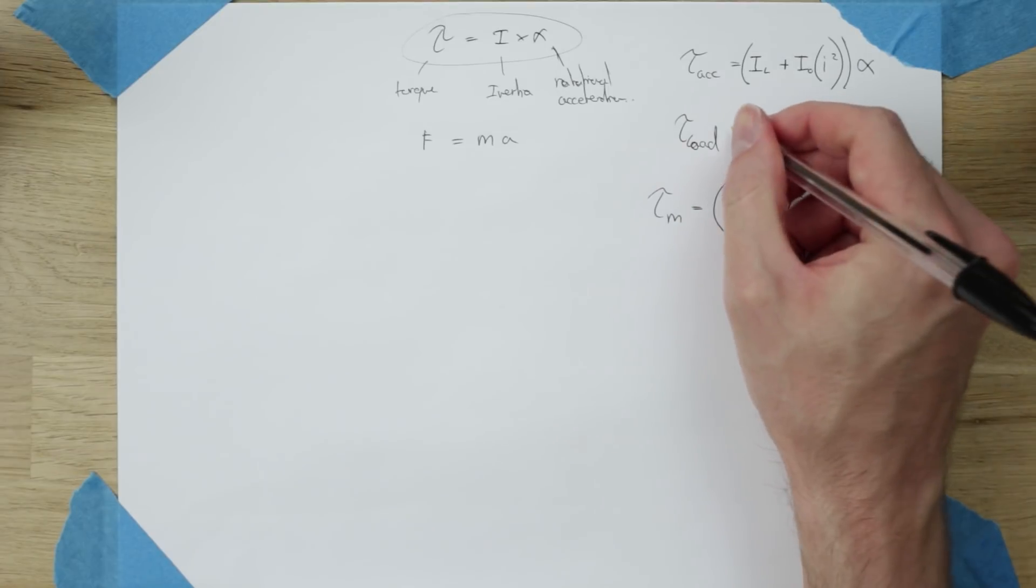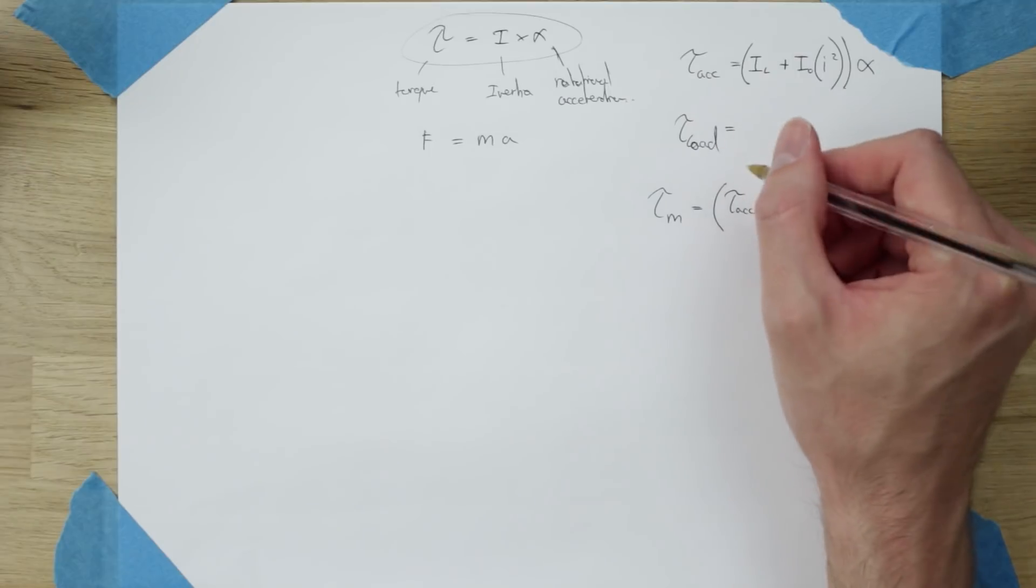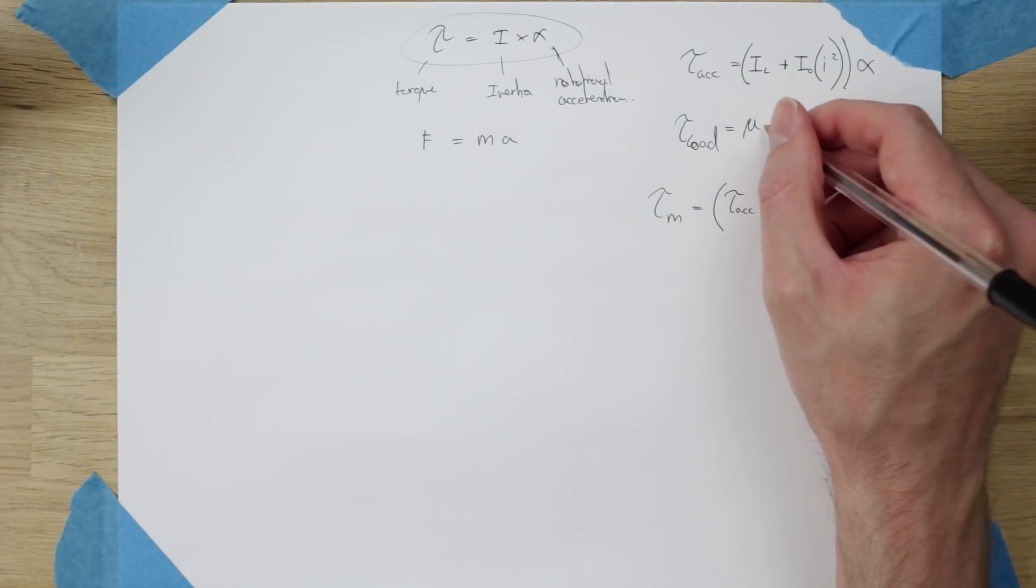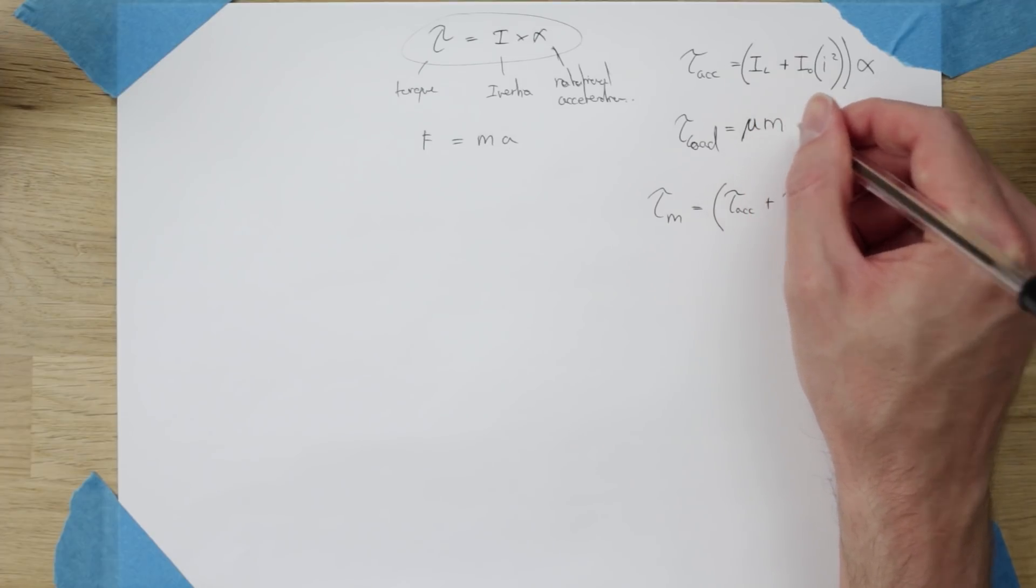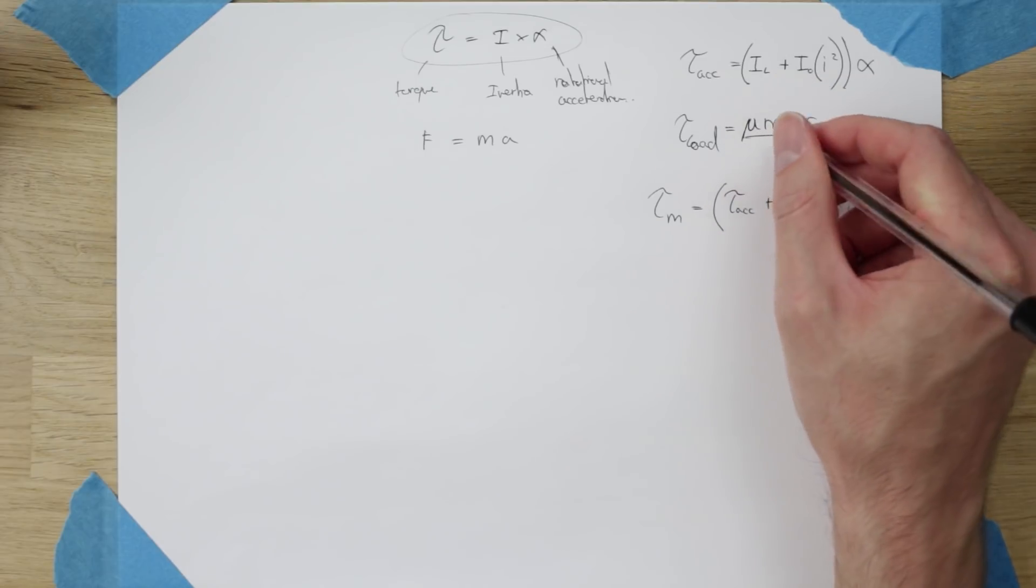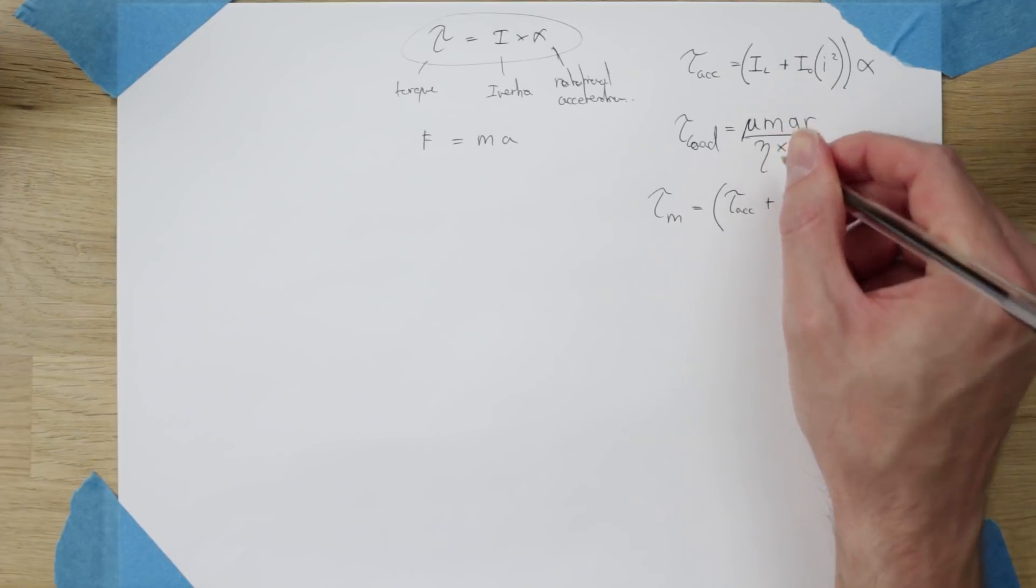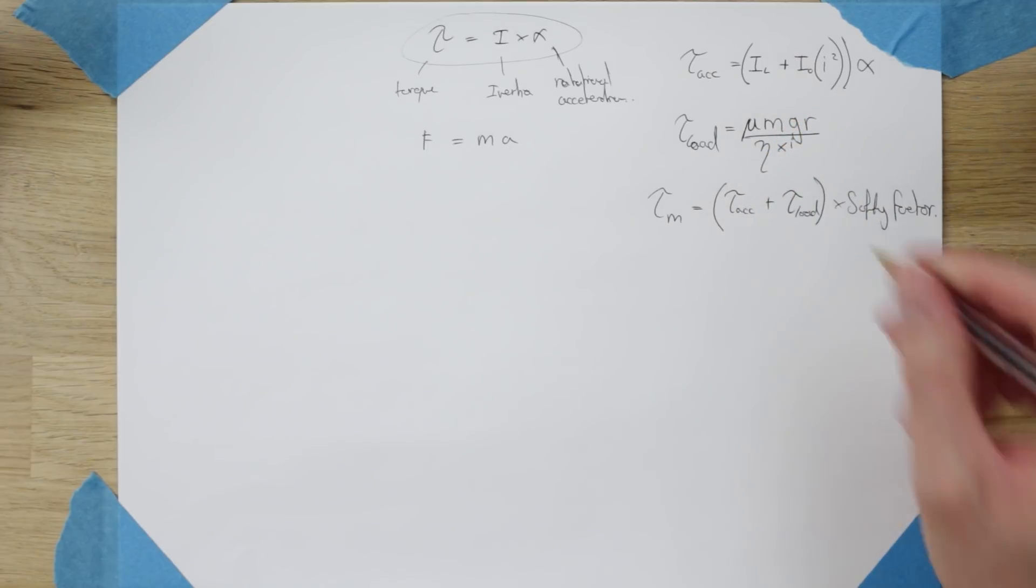For the load torque we will derive it in a moment but for now I'll just write it as mu which is the friction coefficient times m the mass of the object times g gravity times r the radius of the pulley all over n which is the system efficiency times i which again is the gear ratio. So those are the equations that we're going to use.